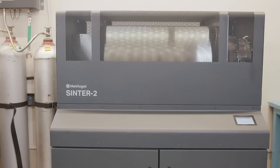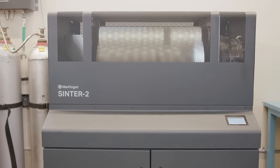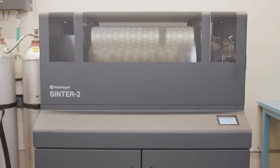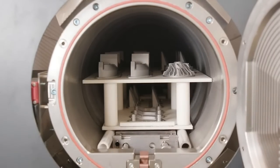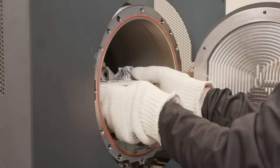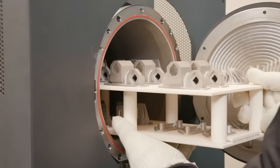Markforged sintering furnaces use a carbon-free retort to ensure part quality and alloy composition standards are met for our finished pieces. Each run takes about a day and can be monitored remotely using the Eiger software. Once a run is complete, the setter tray full of finished metal pieces can be removed from the furnace. Once removed from the raft, these parts are ready for use.